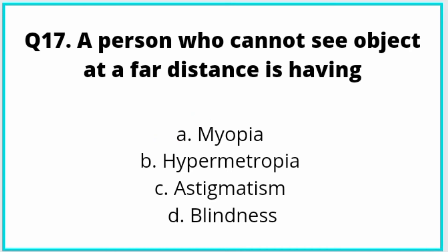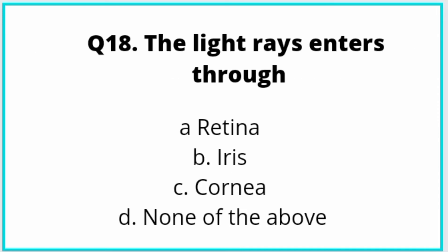Question number 18: The light rays enter through which structure? The correct answer is: light rays enter through the cornea.